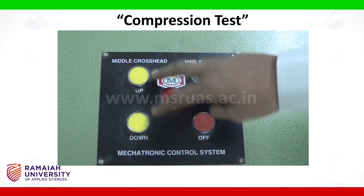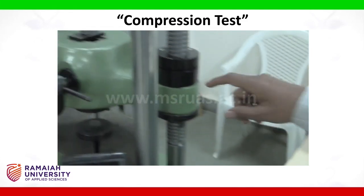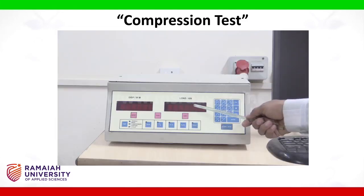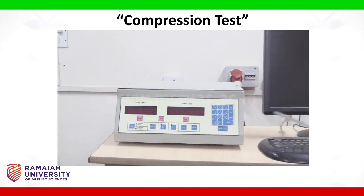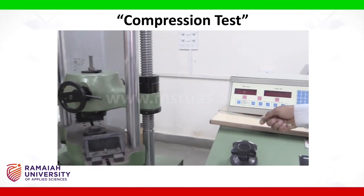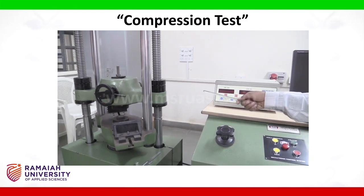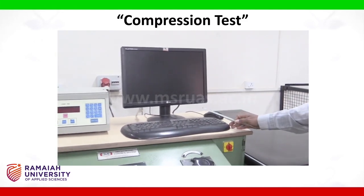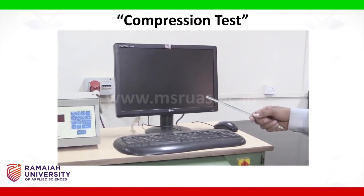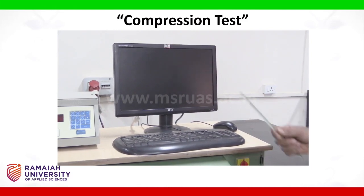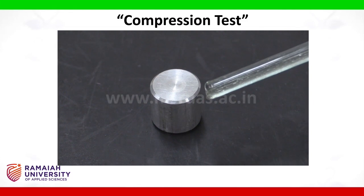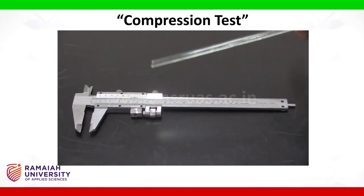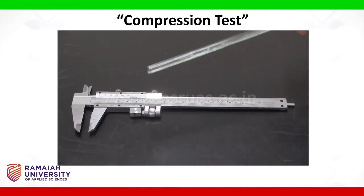The two yellow buttons control the movement of the middle cross-head. The middle cross-head is in the centre, the upper cross-head is above it, and the lower cross-head is below. The data acquisition system is connected to the computer and to the UTM, and is used to acquire the load applied and the displacement of the cross-head. We can record data and view the load-displacement graph on the computer using the mechatonic software. The specimen we will use for the compression test is an aluminium specimen, and we will measure it using a vernier caliper.